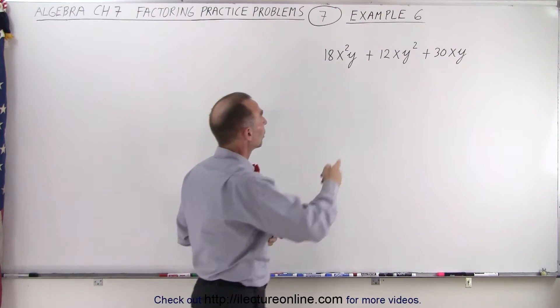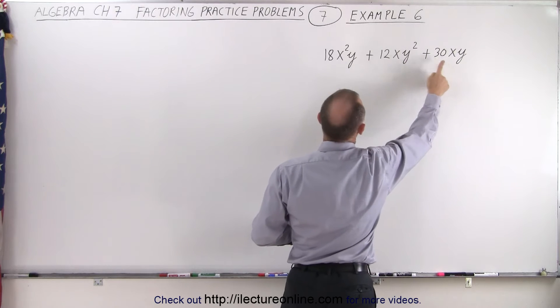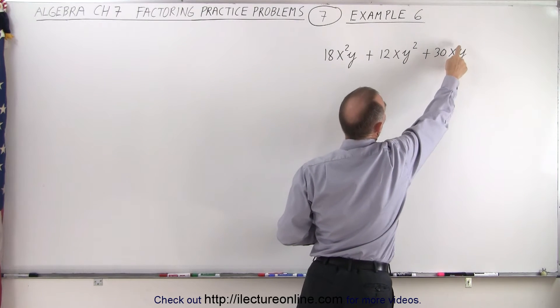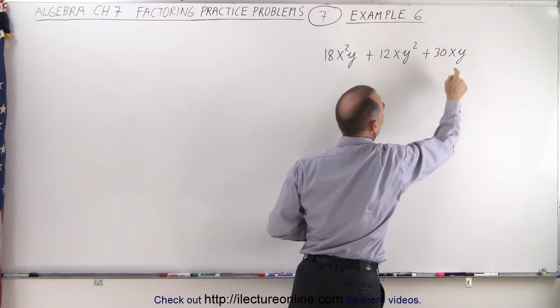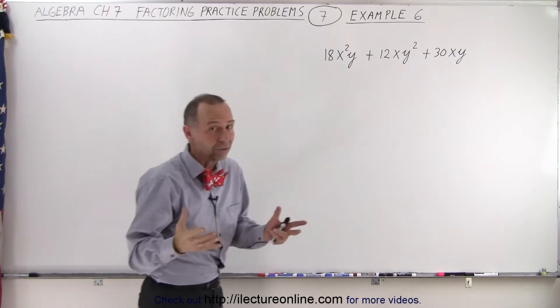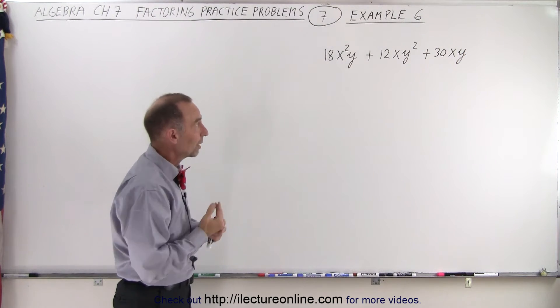And notice that every term contains at least an x and contains at least a y. Since it's x to the first and y to the first there, the maximum we can factor out with x and y is just x to the first and y to the first.